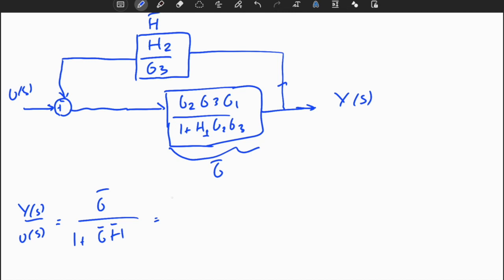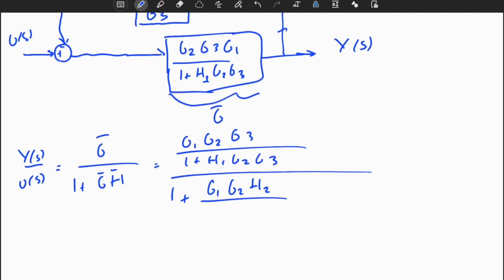So what is g hat? G1 G2 G3 divided by 1 plus H1 G2 G3, divided by 1 plus g hat times h hat, which is G1 G2 G3 over 1 plus H1 G2 G3, times H2 divided by G3.